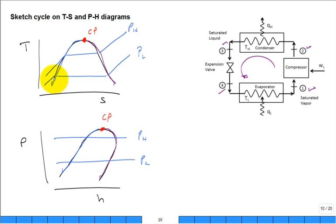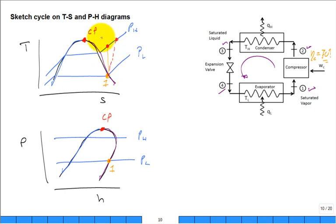The dome on the P-h diagram looks like this — the critical point is at the top at the highest pressure, shifted slightly. Just as on the T-s diagram, we have a sequence of saturated vapor states to the right and saturated liquid states to the left of the critical point. State 1 is saturated vapor at low pressure — placed right on the low pressure line at the saturated vapor curve.